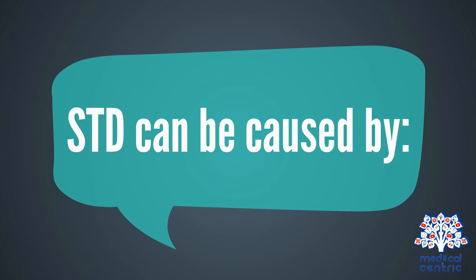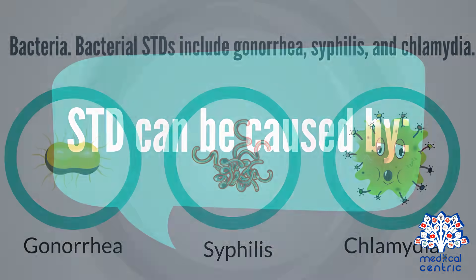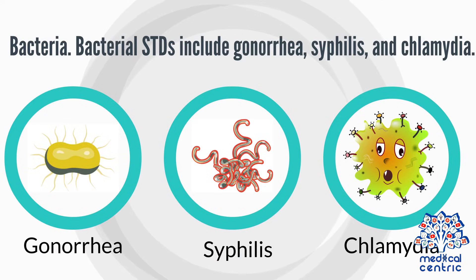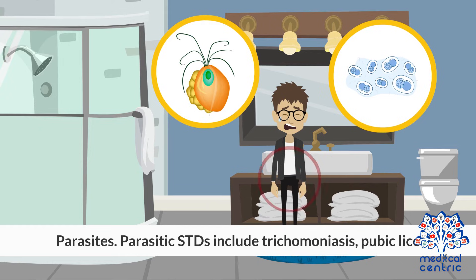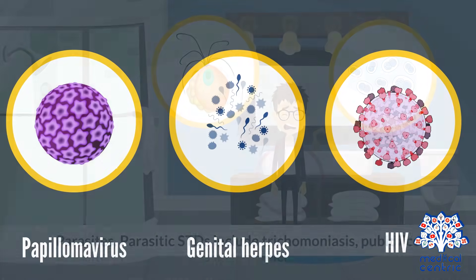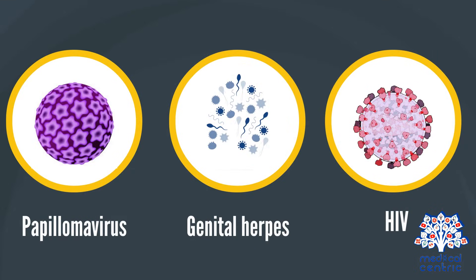Causes: STDs can be caused by bacteria — bacterial STDs include gonorrhea, syphilis, and chlamydia. Parasites — parasitic STDs include trichomoniasis and pubic lice. Viruses — viral STDs include human papillomavirus, genital herpes, and HIV.